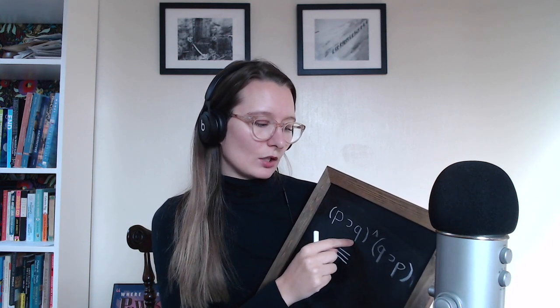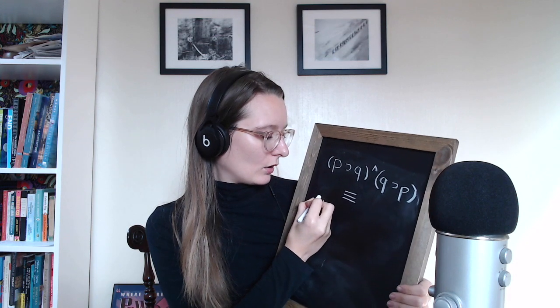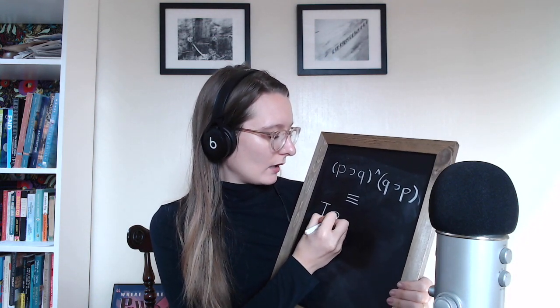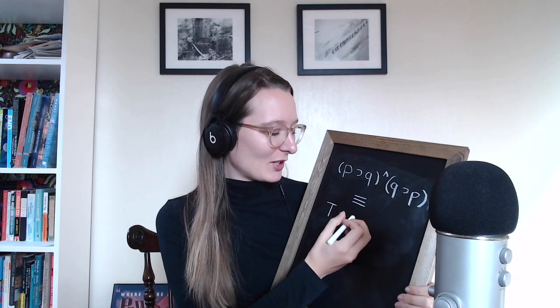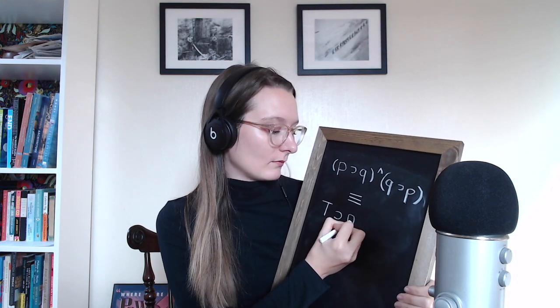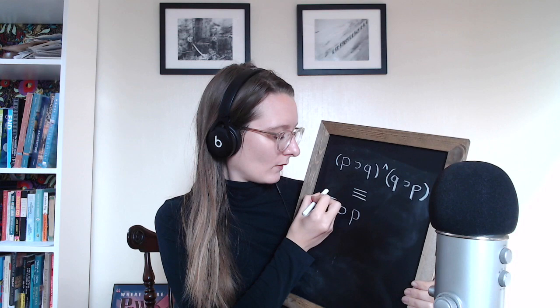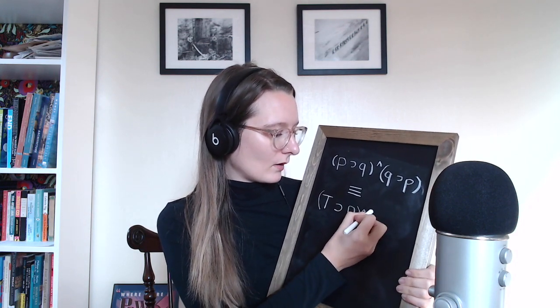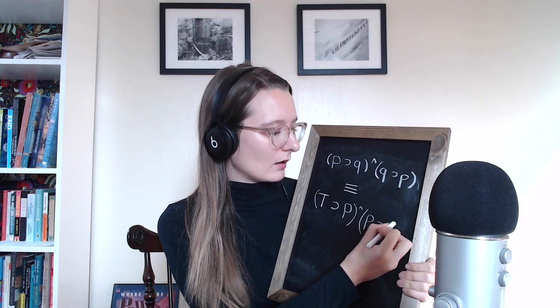So this says: if P then Q, and if Q then P. Let's say instead of P, we're going to say: if a thing is a triangle, then it is a polygon with three sides and three vertices. And polygon with three sides and three vertices is going to be capital P. So: if a thing is a triangle, then it is a polygon with three sides and three vertices. And if a thing is a polygon with three sides and three vertices, then it is a triangle.